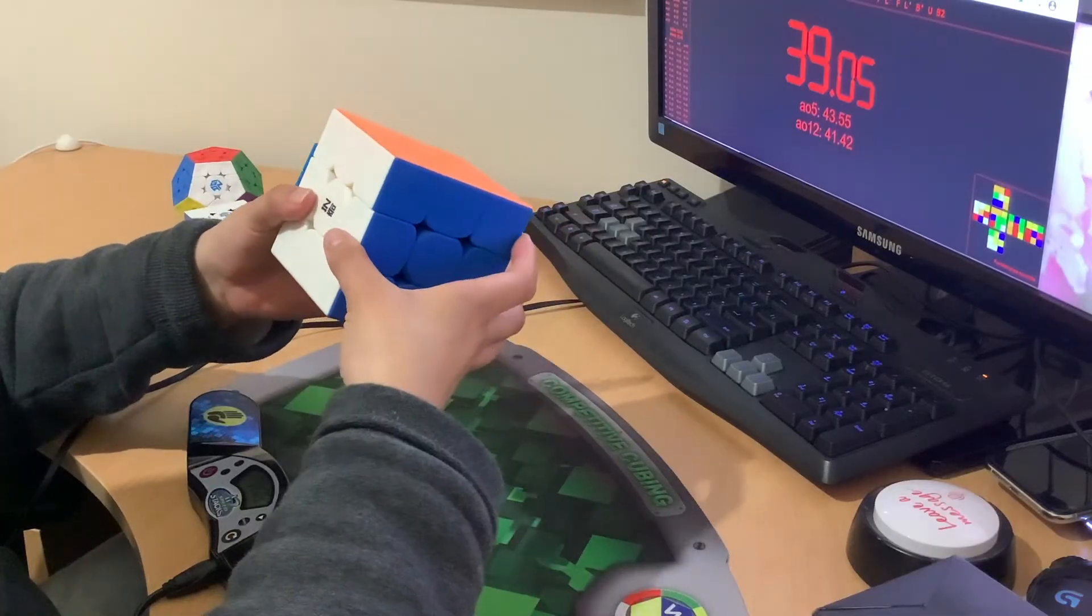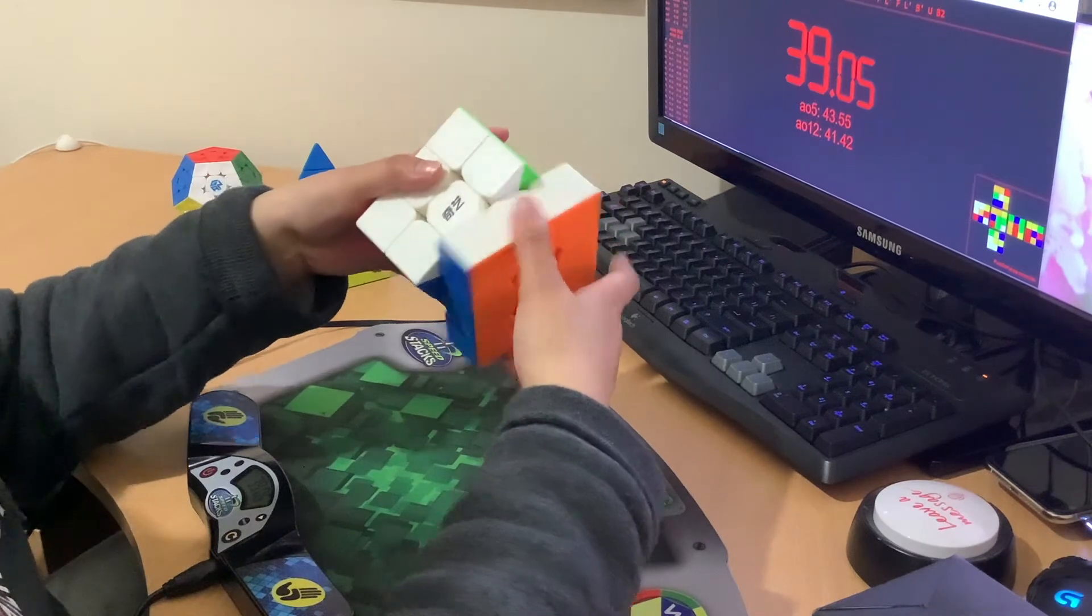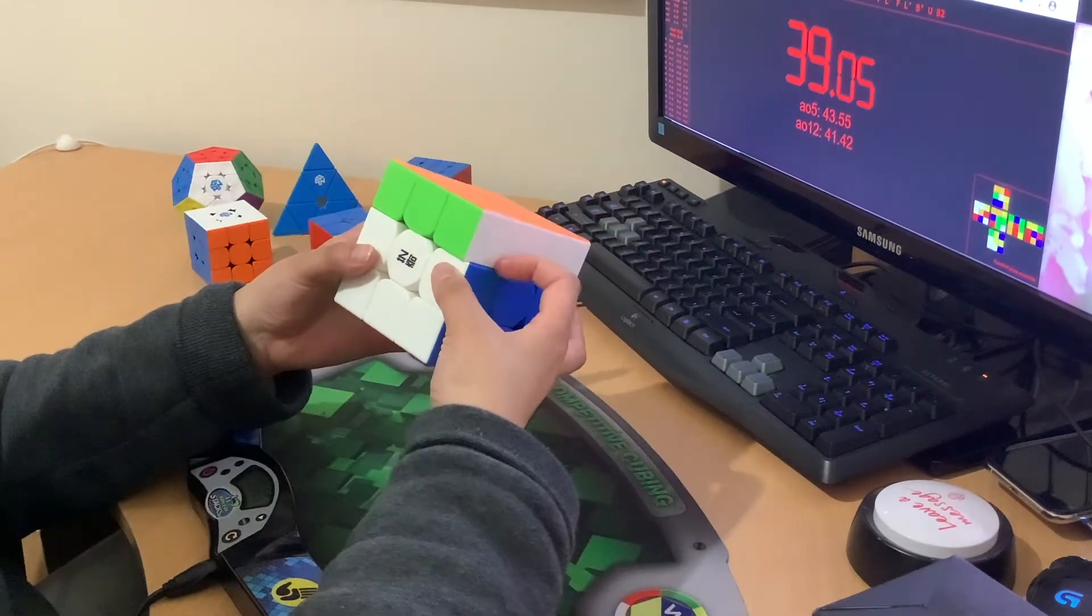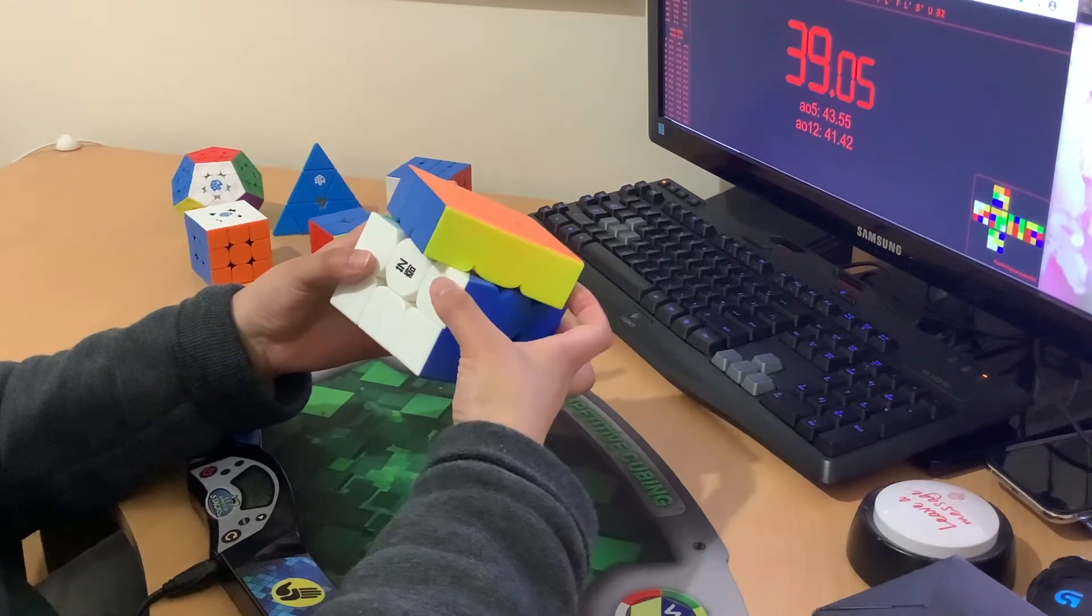So if you intend to magnetize the Qi Yi Qingmen Plus I definitely feel like strong magnets are the way to go. You can definitely feel a slight bump. Anything lighter you definitely wouldn't feel as the plastic's just too thick and the magnets would be too far apart.